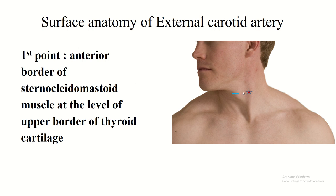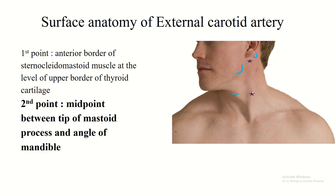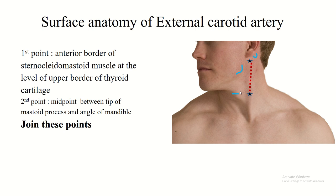Surface anatomy of the external and internal carotid arteries. First point: anterior border of the sternocleidomastoid muscle at the level of the upper border of the thyroid cartilage or laryngeal prominence. Next point: midpoint between the tip of the mastoid process and the angle of the mandible. Join these points — this is the external carotid artery.